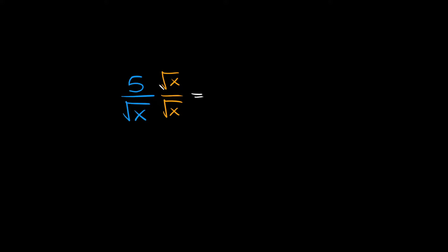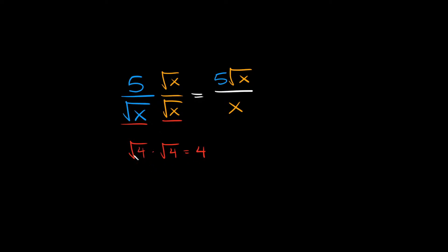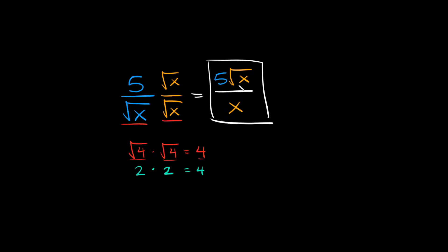So on top we have 5 times the square root of x, and that goes over the bottom: the square root of x times the square root of x, which is just equal to x. To illustrate: the square root of 4 times the square root of 4 equals 4, because the square root of 4 is 2, and 2 times 2 is 4. So the square root of x times the square root of x is just x. We can have a radical in the numerator — we just can't have radicals in the denominator. So the simplified answer is 5√x over x.